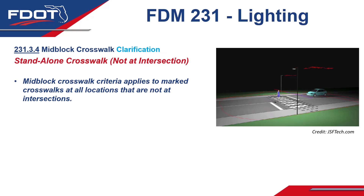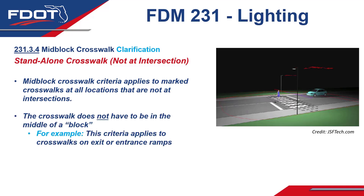Moving along to Section 231.3.4 for mid-block crosswalks, a small clarification has been offered for standalone crosswalks. Mid-block crosswalk criteria applies to marked crosswalks at all locations that are not at intersections — the crosswalk does not have to be in the middle of a block for this policy to apply. For example, mid-block crosswalk criteria applies to crosswalks on exit or entrance ramps.